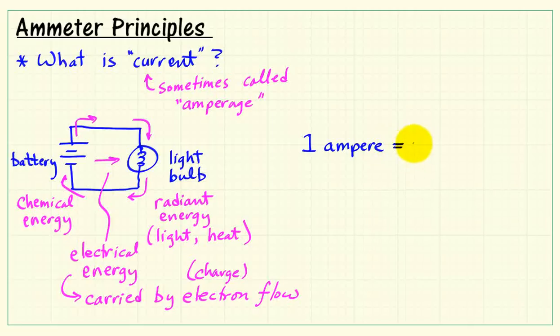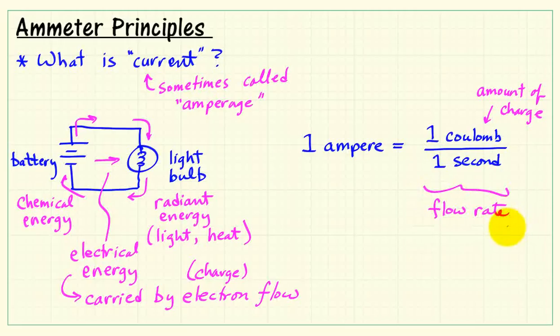Now the ampere, or amp, is the measure of current. This is 1 coulomb per 1 second. So 1 ampere is 1 coulomb of charge per second. We see that this is coulombs per second, and that's a flow rate.